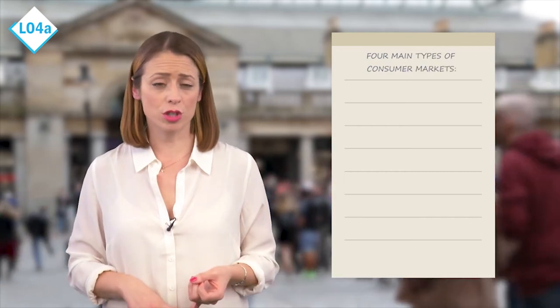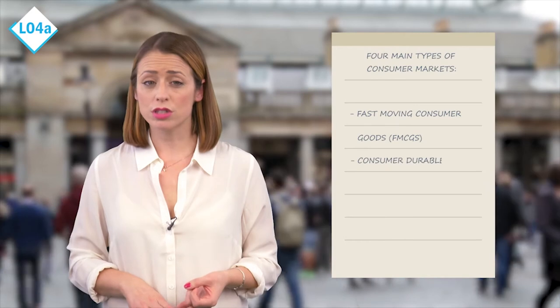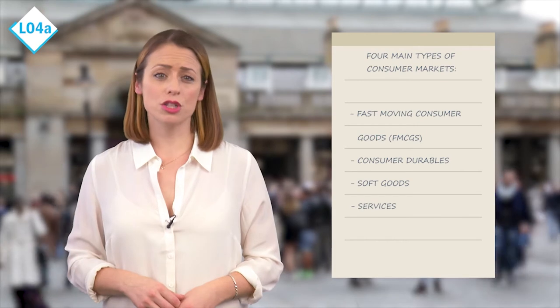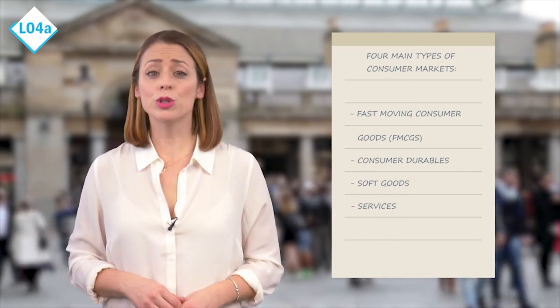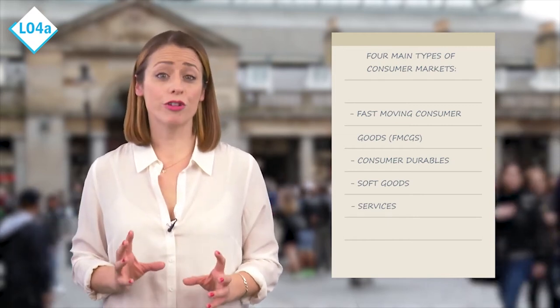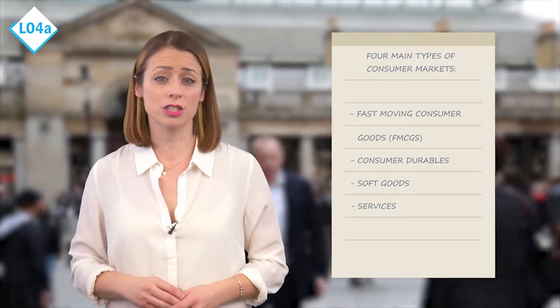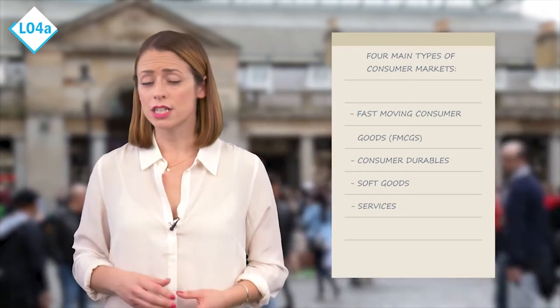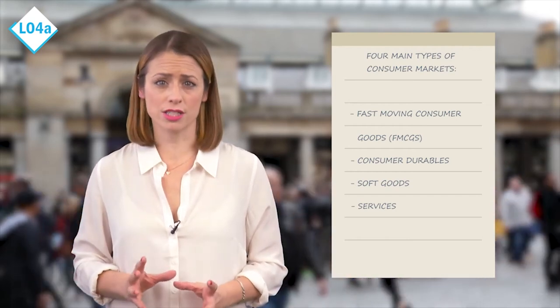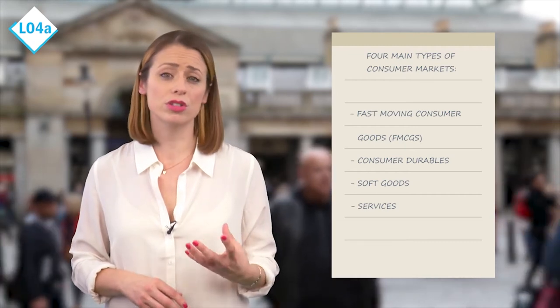When you begin to look at the different types of consumer markets, we will learn that there are four main types: fast-moving consumer goods, consumer durables, soft goods, and services. You will focus on the first two in this learning objective. Fast-moving consumer goods are high volume, low value, and frequently repurchased items such as bread or bin liners. Meanwhile, consumer durables are low volume, high value, infrequently repurchased items such as computers or tumble dryers.